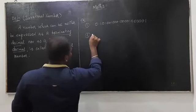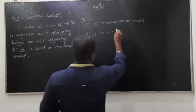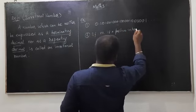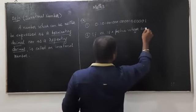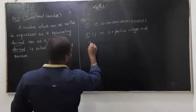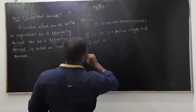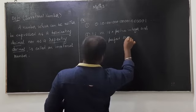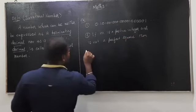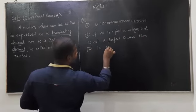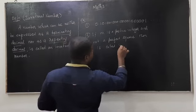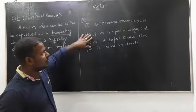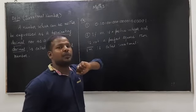What about the second example? If N is a positive integer and N is not a perfect square, then the square root of N is called an irrational number. Let's understand clearly: if N is a positive integer — 1, 2, 3, 4, 5, 6, 7 and so on — these are called positive integers.